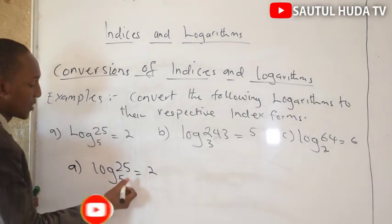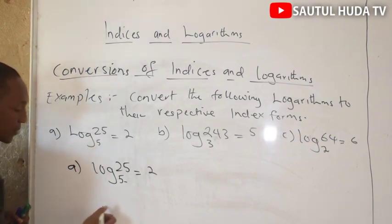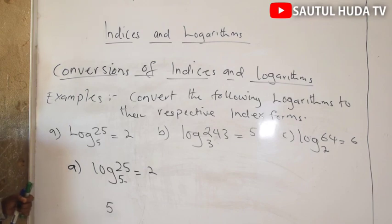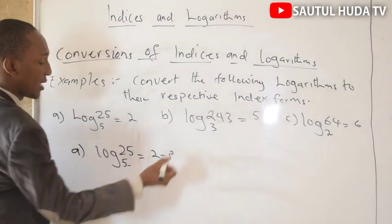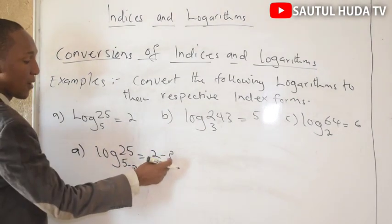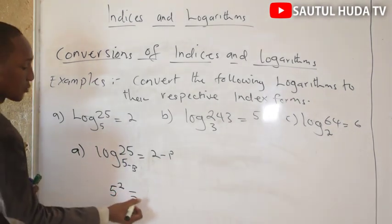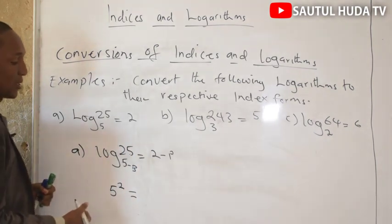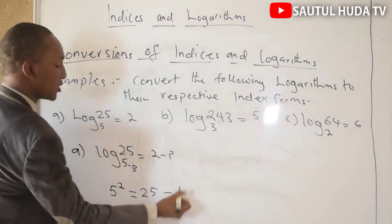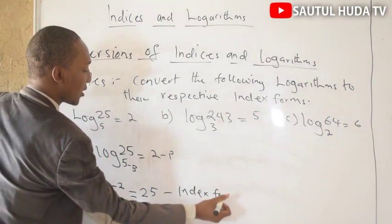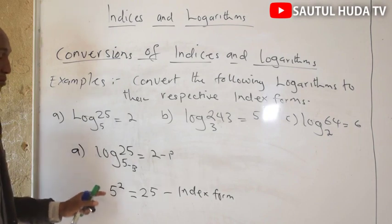Example one: log 25 base 5 equals to 2. This is logarithm form or log form. To convert logarithm form to index form, you take the base which is 5, then the power which is 2, then the number. So 5 power 2 equals to 25. This is the index form converted from logarithm form.